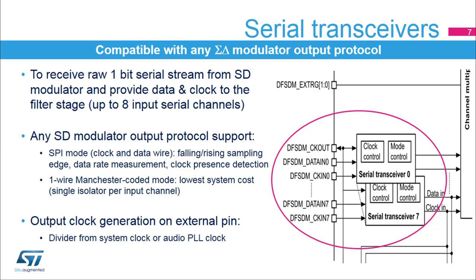A synchronization detection feature is also available in Manchester mode. Manchester mode also offers the lowest system cost in case of optical isolation of the sigma-delta modulator — only one single isolator per input channel is necessary. The DF-SDM clock features a clock output signal to drive the sigma-delta modulator. It can be used as a source for the SPI clock input by internal interconnection in order to save external pins. The clock output has an adjustable division factor and can be driven either from the system clock or from the fine-tuned audio PLL clock.